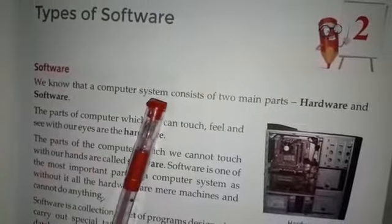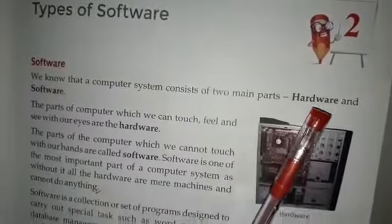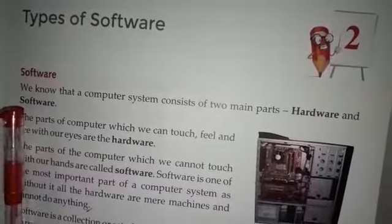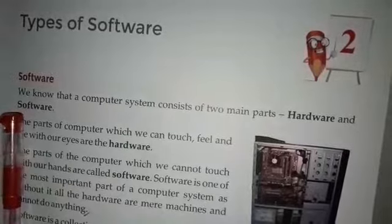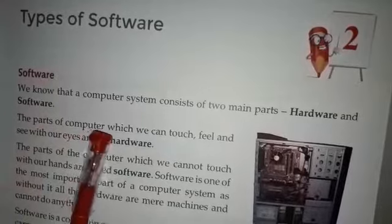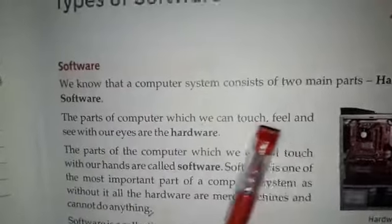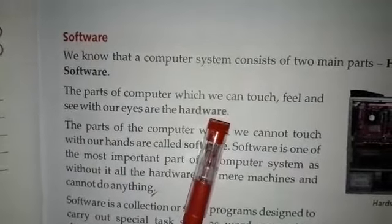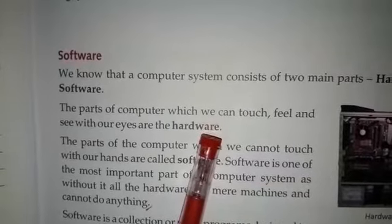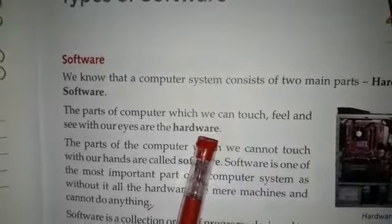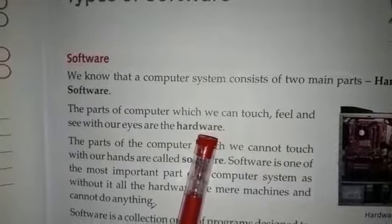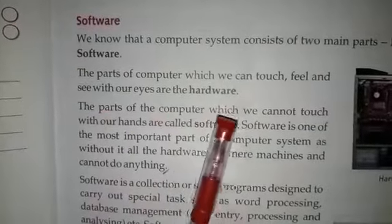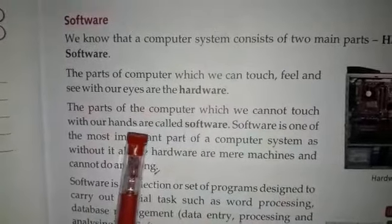We know that a computer system consists of two main parts: Hardware and Software. The parts of computer which we can touch, feel and see with our eyes are the hardware. Computer का वैसा पार्ट जिसे हम touch कर सकते हैं, जिसे हम महसूस कर सकते हैं कि वह hot है या cold, hard है या soft, और जिस पार्ट को हम अपनी आँखों से देख सकते हैं, उसे हम hardware या hardware devices कहते हैं. The part of the computer which we cannot touch with our hands are called software.